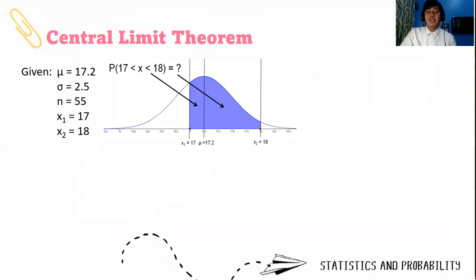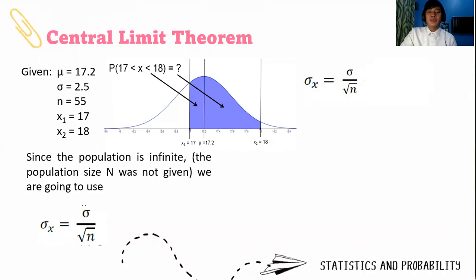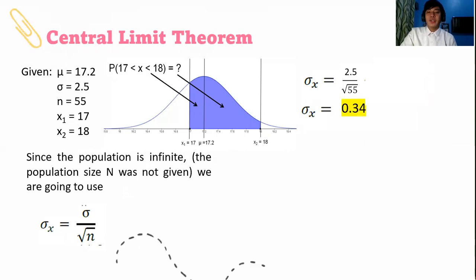First, we get the area from 0 to μ to x₁. But we have to find first the standard deviation of the sampling distribution of the sample means when it is infinite. Substituting the value, we have 2.5 divided by the square root of 55. Our σ sub x̄ is 0.34.